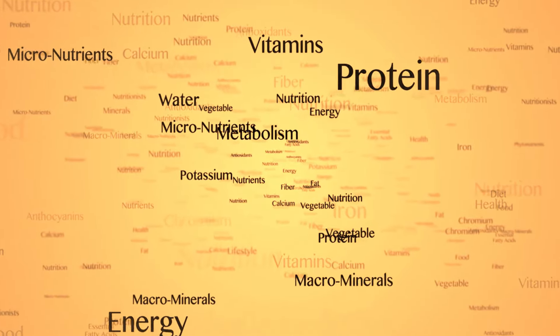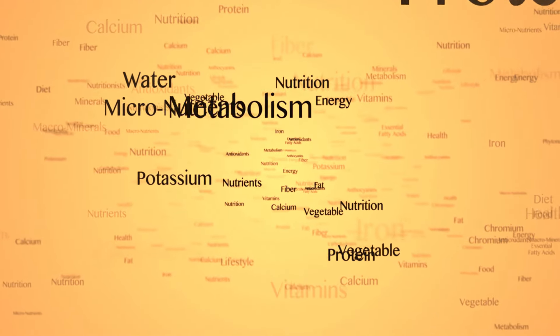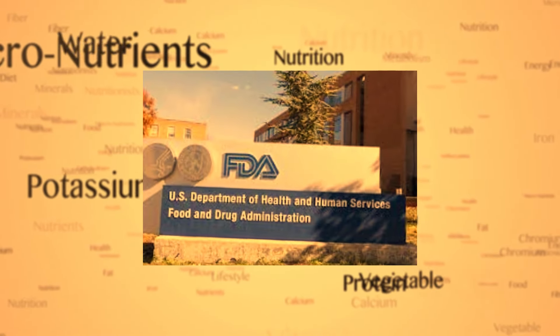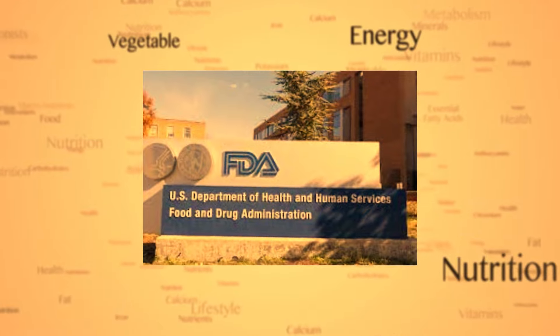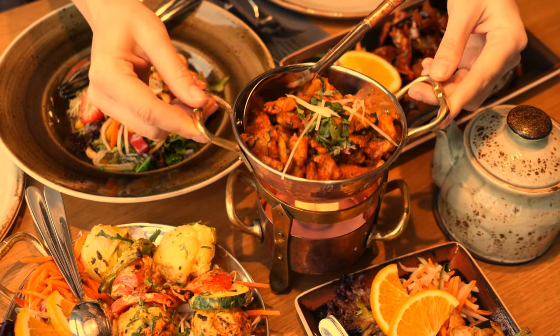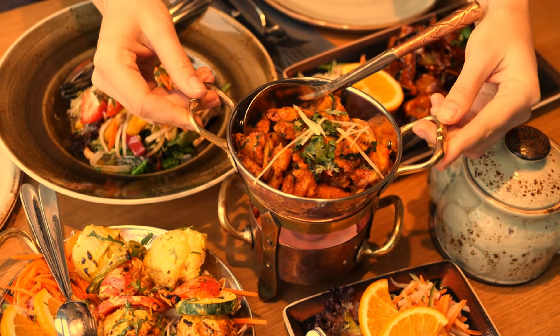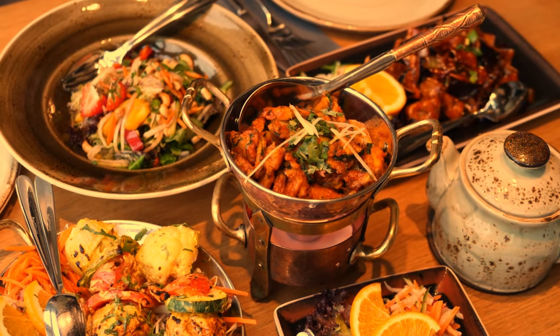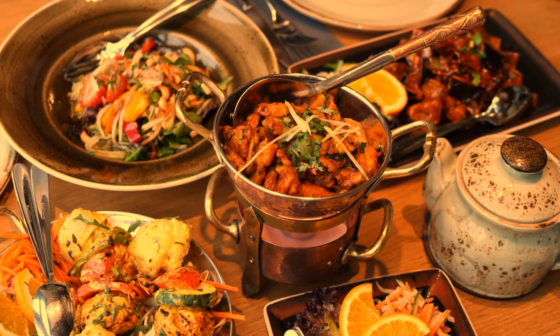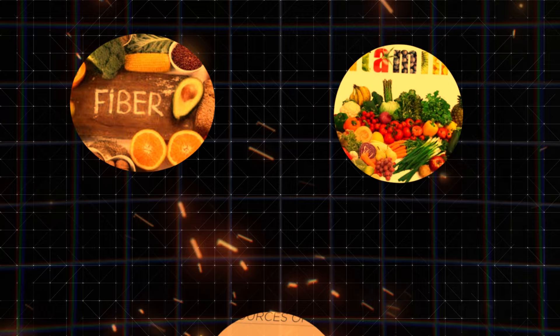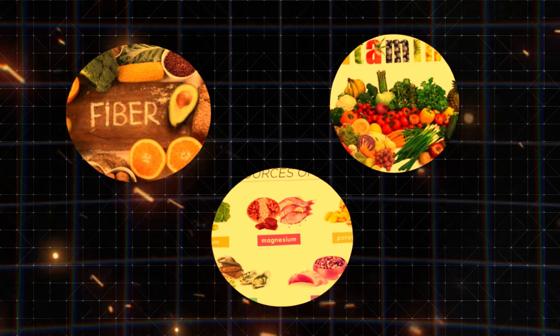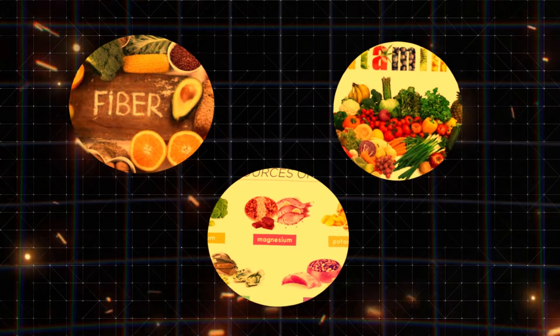Nutritional content: While amygdalin-containing foods are often touted for their Vitamin B17 content, it's important to note that they also provide other essential nutrients such as fiber, vitamins, and minerals. However, these nutrients can be obtained from a variety of other foods without the associated risks of cyanide poisoning.